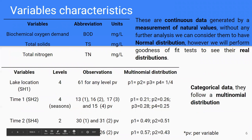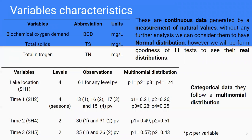We have three continuous variables: biochemical oxygen demand, total solids, and total nitrogen. These are continuous and generated by measurement of natural values. Without further analysis, we might consider that they follow a normal distribution, but we will perform goodness-of-fit tests to verify. We also have four categorical data variables — the lake locations, or sampling points — with four levels, one per sampling point, and 61 observations per one. All these categorical variables follow a multinomial distribution.